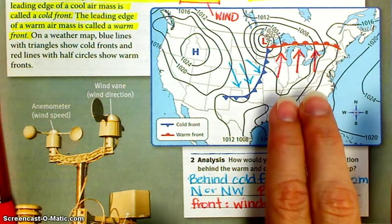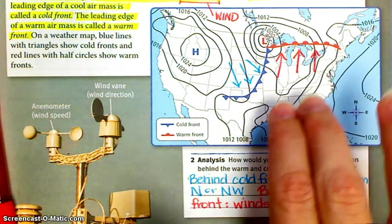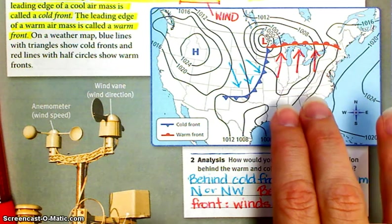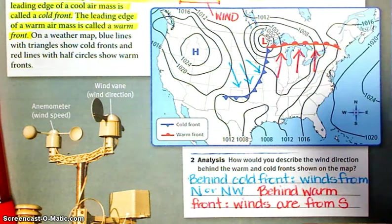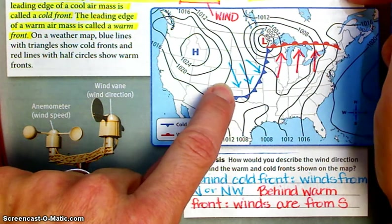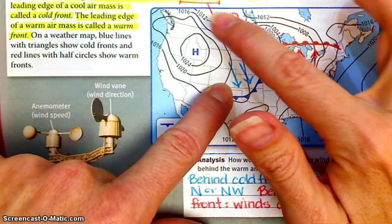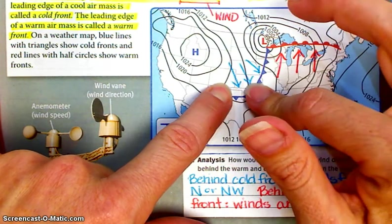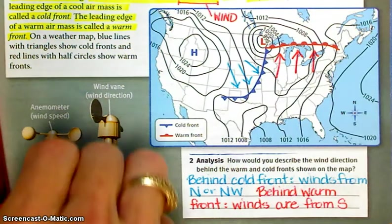So warm front moving up from south to north. That's the direction that the wind is going to take, too, from south to north. So winds are from the south. Over here, the cold front, winds are from either the north or the northwest. They're coming from the northwest going towards the southeast.